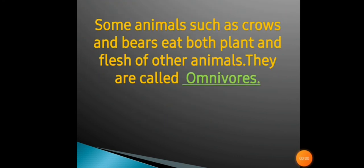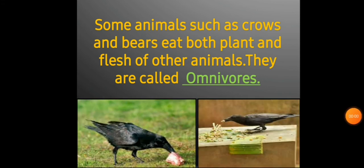Some animals such as crows and bears eat both plants and flesh of other animals. They are called omnivores. Jaise hum bhi ya to veg khaate hain ya to non-veg ya to dono khaate hain, waise bhi animals mein bhi ya to plants khaate hain ya to dono khaate hain.